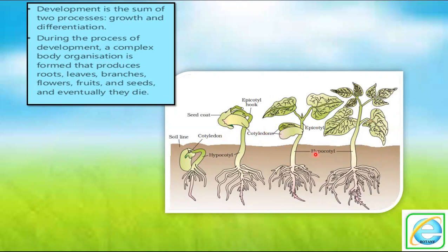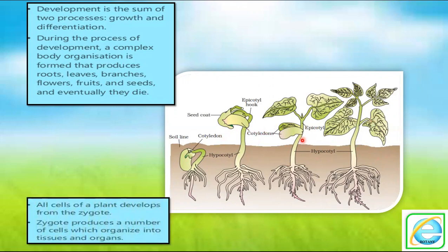Development is the process of complex body organization formation — roots, leaves, flowers, branches, seeds. All these cells get developed from the zygote. The zygote forms new cells; the zygote produces a number of cells which organize into tissues and organs. A single cell divides and redivides to form a tissue, and tissues come together to form an organ. This is a simple body organization: a single cell converted into a complex body organization.